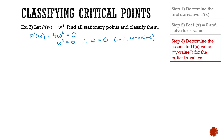Next, we're going to determine the associated vertical values — the p value — for the critical w values. So I take my original equation, p(w) = w to the power of 4, and substitute w = 0 into it. I get 0 to the power of 4, which gives me p = 0. So I now know I have a critical coordinate at (0, 0) — my w value is 0 and my p value is 0 at the critical point.